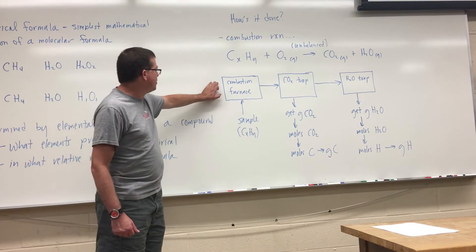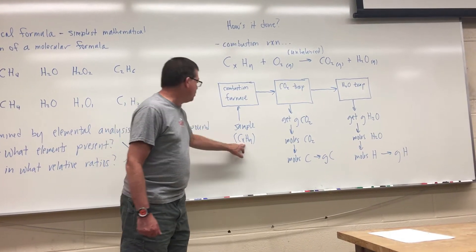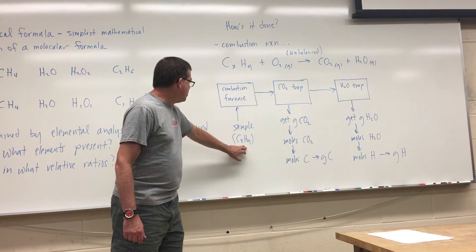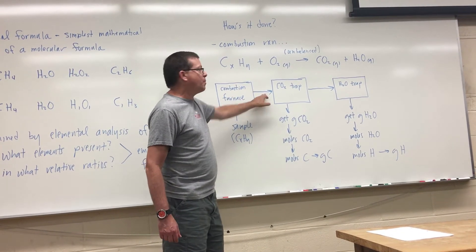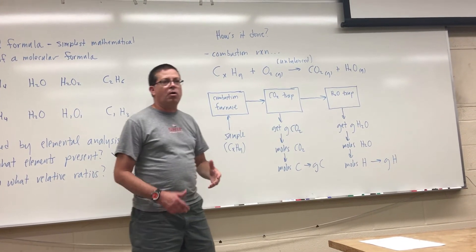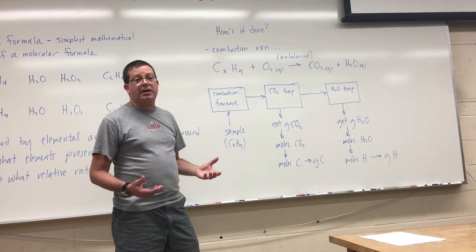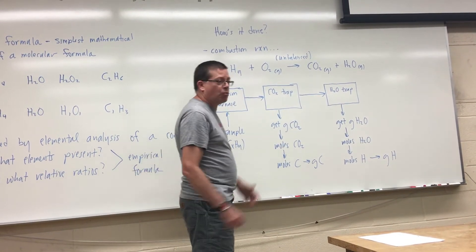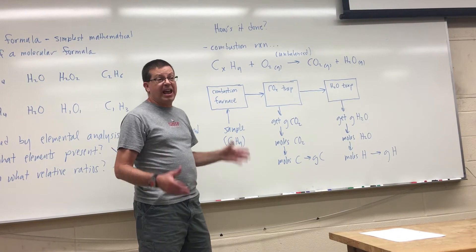We use a combustion furnace — a closed container where the burning process can occur. The sample, in this case a hydrocarbon CₓHᵧ whose empirical formula I'm trying to find, is placed into the combustion furnace and burned. What comes out are the combustion products: carbon dioxide and water vapor. I have individual traps that sequester those two compounds. In my CO₂ trap, I sequester only carbon dioxide. Everything that isn't carbon dioxide passes through to a water trap, where only water is trapped.